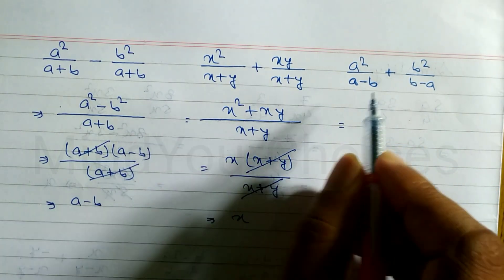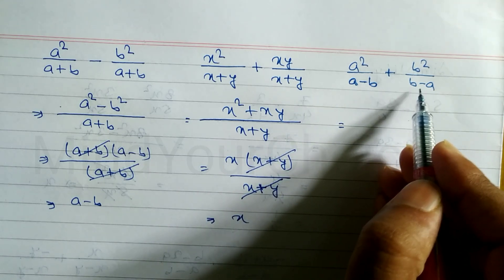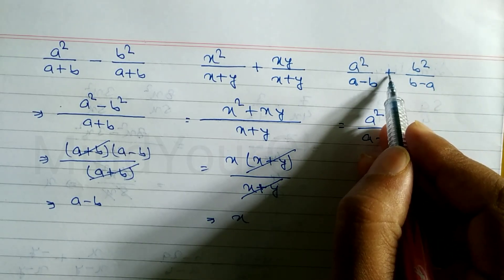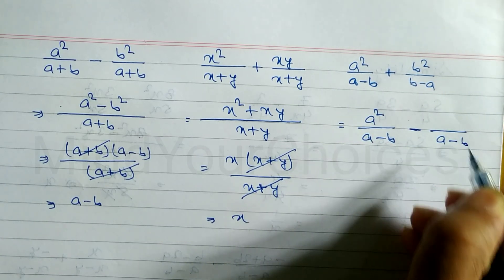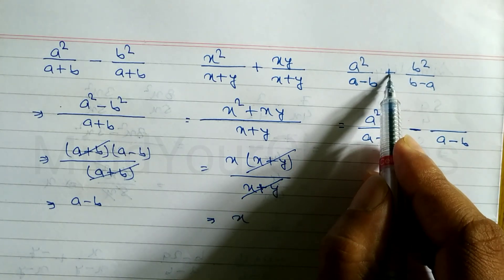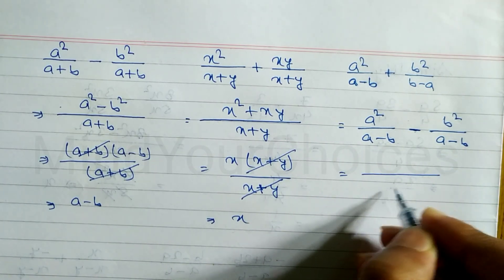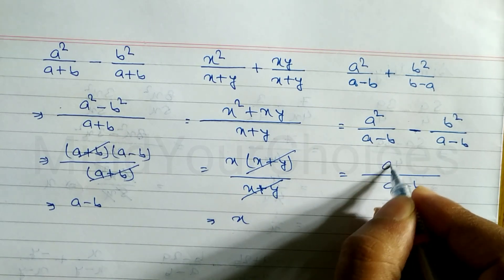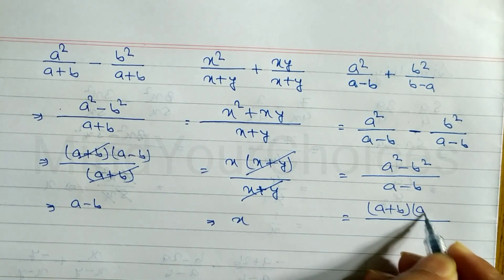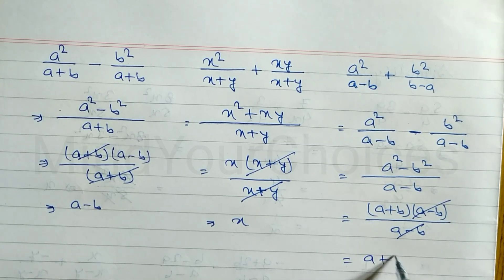In this question, one denominator is (a-b) but the other is (b-a) — they are not the same. When we take minus common, we can interchange the elements. So we write a² over (a-b), change plus to minus, and interchange to write (a-b) with b². Now LCM is (a-b), and the numerator becomes a²-b². Using the formula a²-b² = (a+b)(a-b), divided by (a-b), the (a-b) cancels and the answer is (a+b).